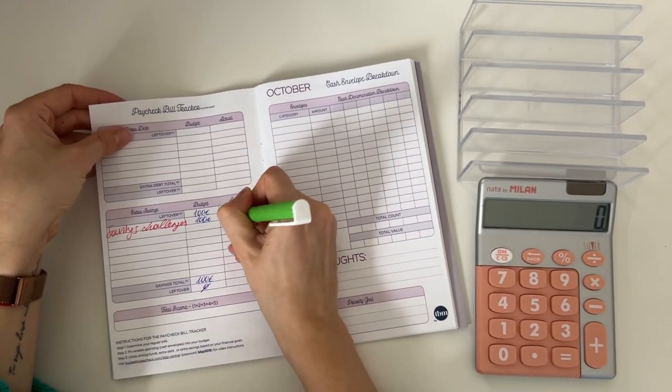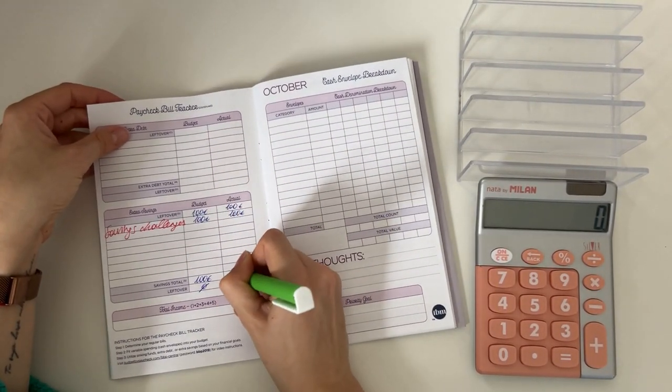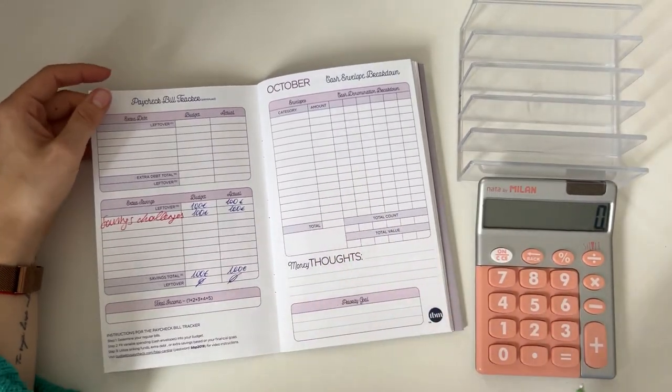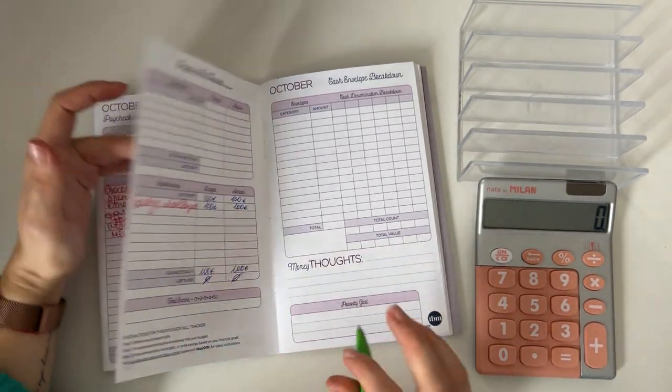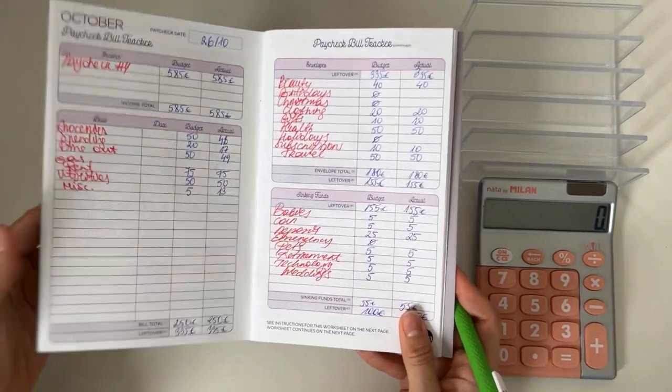And all of that 100 we put into our savings challenges. So that was the budget for the last week of October.